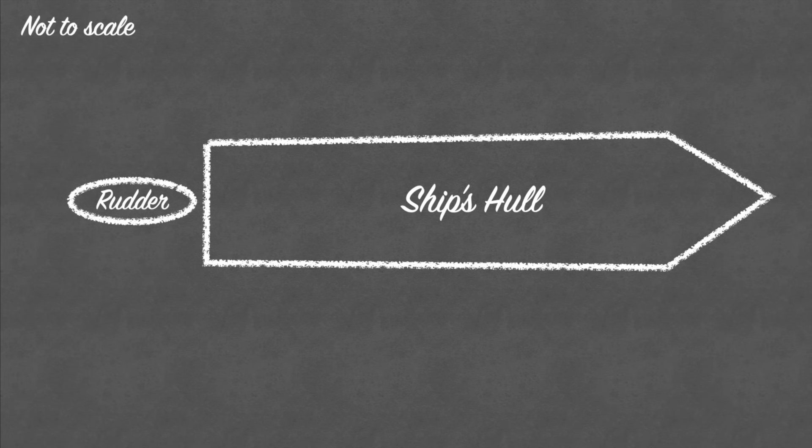A vessel's rudder is most commonly found at the back or the stern of the vessel. In this example the size of the rudder has been exaggerated to make it easier to visualize.